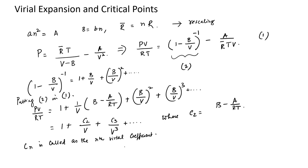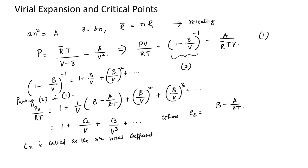Cₙ is called the nth virial coefficient. The main question is how much does the Van der Waals equation for a real gas differ from the ideal gas law PV = nRT. The second virial coefficient C₂ is the leading order correction to the ideal gas law, C₃ is the second leading order correction, and so on. If you can find all these virial coefficients, you know how much the real gas differs from an ideal gas.